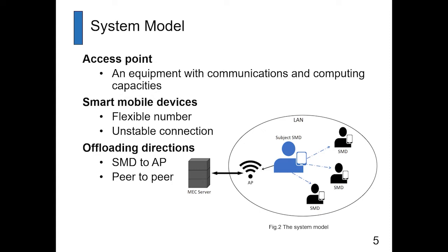Our system model has three parts: access points, smart mobile devices (SMDs), and offloading directions. The access point is equipment with communication and computing capability, like a Wi-Fi router or wireless device. Smart mobile devices have a flexible number and unstable network connections — they could be cell phones, laptops, or Raspberry Pis. In our model, offloading directions have two ways: SMD to AP, or SMD to another SMD.